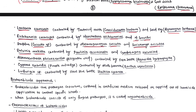Salvinia molesta, an aquatic weed, is controlled by Paulinia acuminata or Cytobagous salvinae. Alternanthera philoxeroides (alligator weed) is controlled by the flea beetle Agasicles hygrophila. Cyperus rotundus (purple nutsedge) is controlled by the moth borer Bactra verutana. Leersia species found in rice fields is controlled by the steel blue beetle Haltica sanya.